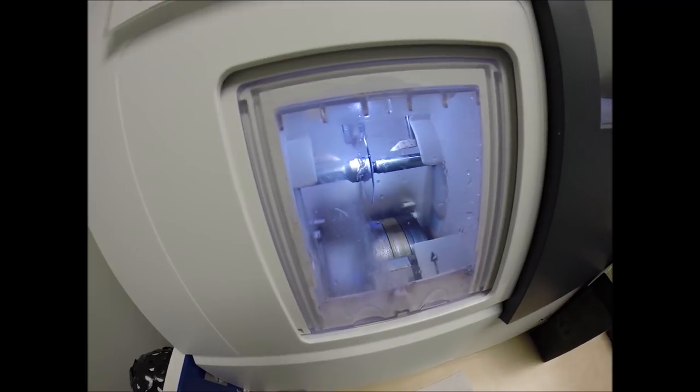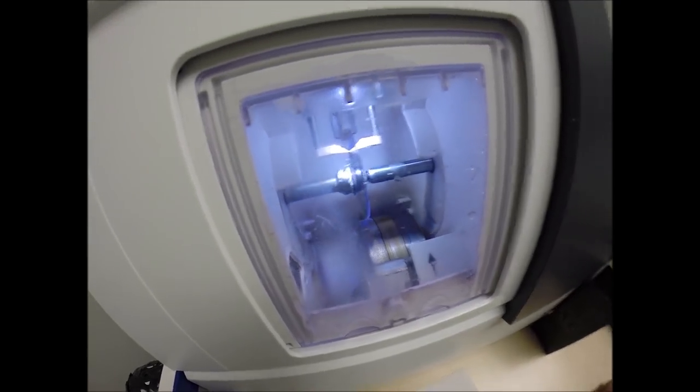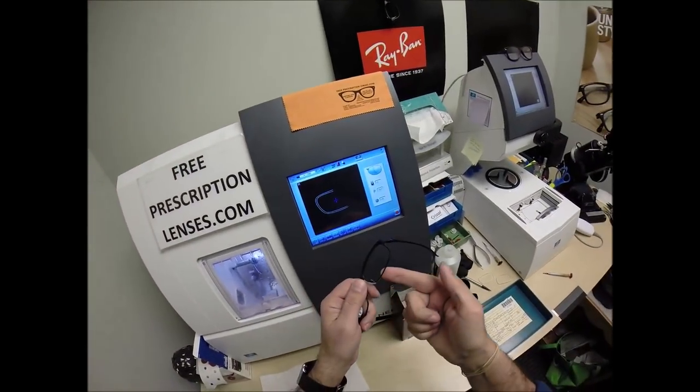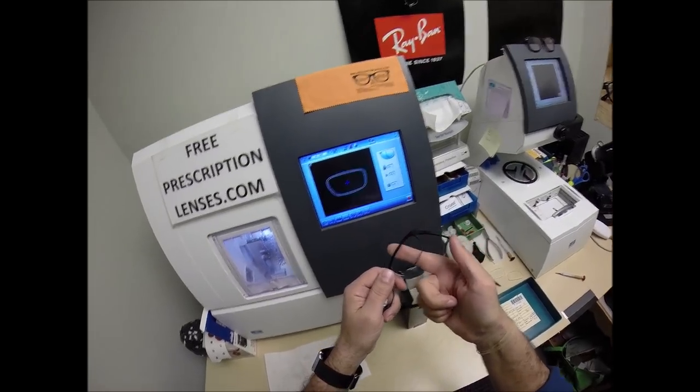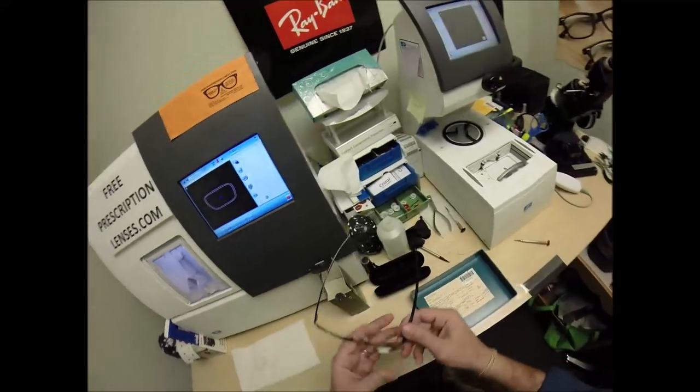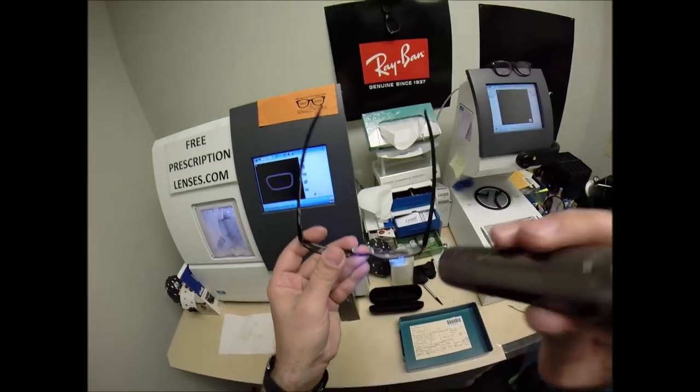Again, first thing, making sure the lens is large enough to fit into the frame. And you can see it's just tracing the left side of the frame. And just like before, measuring the thickness of the lens at every point to know exactly and precisely where to place the bevel, so you have the least amount of edge thickness showing.